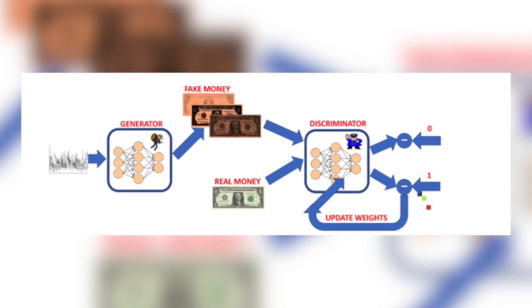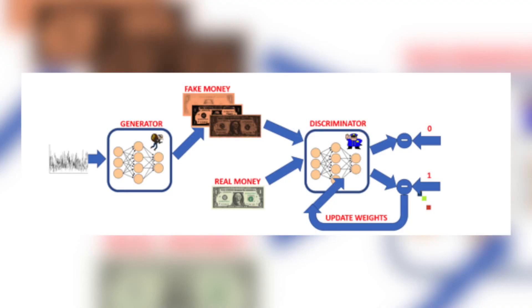Let's take a look at discriminator training first. The generator takes in random noise and generates fake images. Both fake images and real ones are fed to the discriminator in its feed-forward path. The discriminator generates predictions based on both real and fake input images. Those predictions are compared to the true labels and the error is calculated — this is a basic binary classification neural network training problem. The discriminator is trained to predict one for real images and zero for fake ones.